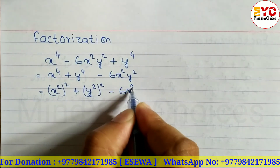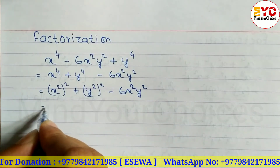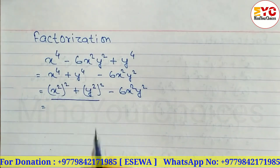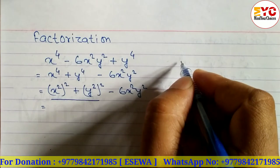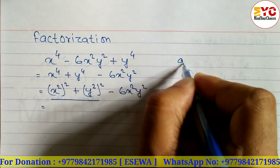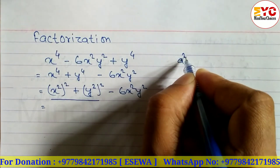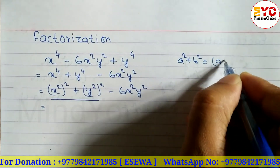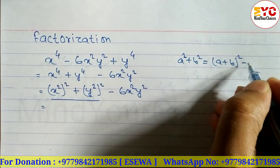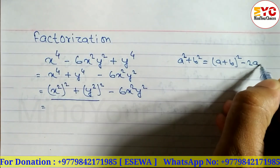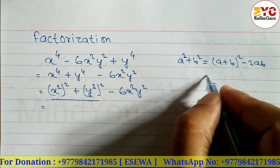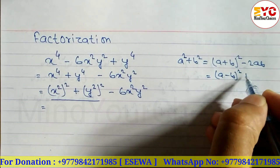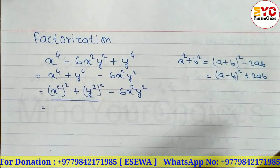Now a squared plus b squared — we have two formulas. The first is: a squared plus b squared equals a plus b whole square minus 2ab. The other formula is: a minus b whole square plus 2ab.